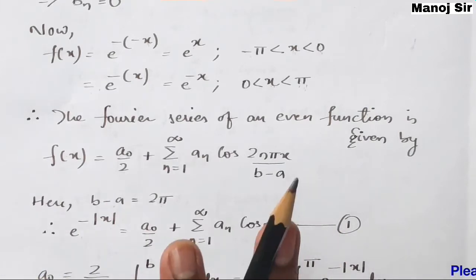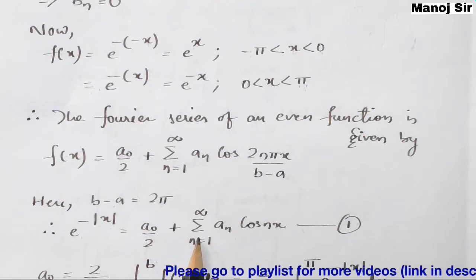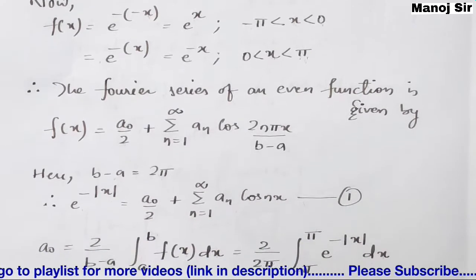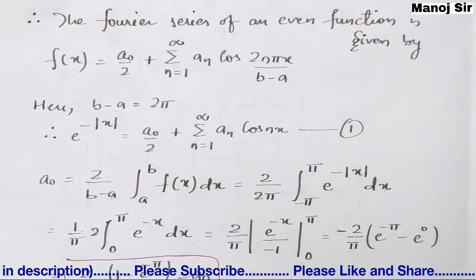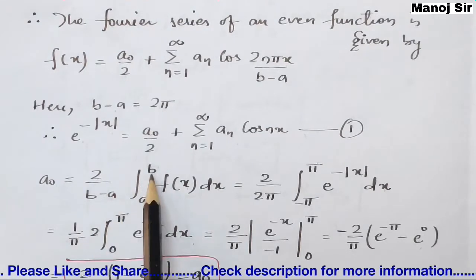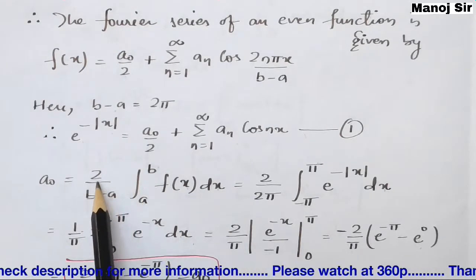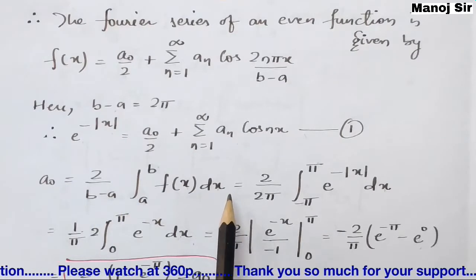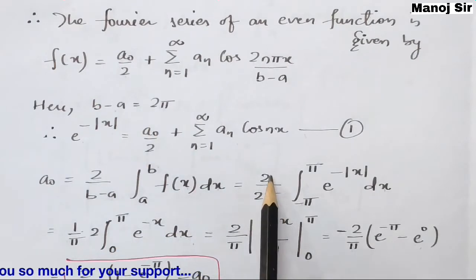We need to find a₀ and aₙ using Euler's formula. The general formula for a₀ is: 2/(b−a) × ∫(a to b) f(x) dx. Since b−a = 2π, we write 2/(2π), and the 2s cancel, leaving 1/π.